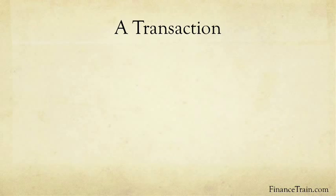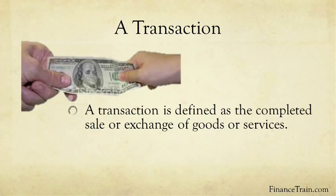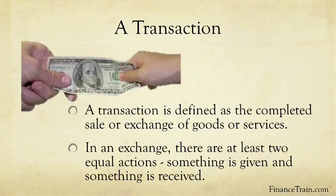Let's begin by understanding what a transaction means. In a business, a transaction takes place by exchanging goods or services for money. In accounting, a transaction is defined as a completed sale or exchange of goods or services. In an exchange, there are at least two equal actions — something is given and something is received.